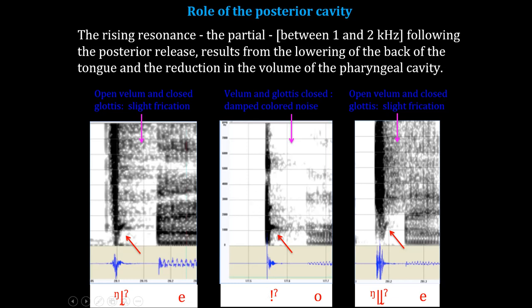For the alveolar glottal click, the velum and the glottis are closed, giving a damped color of noise — a term from music acoustics indicating additional noise accompanying the burst. The lateral click that is nasal and glottal shows a noise band characterizing the lateral click, with an open velum and a closed glottis resulting in a slight frication noise.